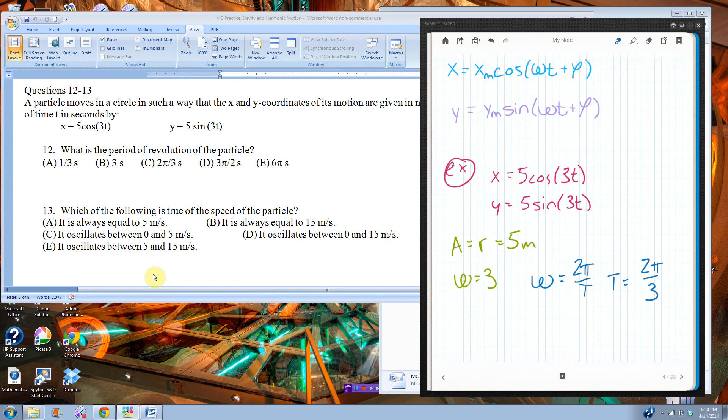Then it says, which of the following is true of the speed of the particle? Well, if it's undergoing uniform circular motion, then the speed is constant. So, it's either A or B, because all the other ones are talking about the speed changing. So, is it A or B? Well, the 5 is the radius, not the speed. If I want speed, remember, linear speed is omega times R, so that's going to be 3 times 5, 15. It is always equal to 15 meters per second, so it's B. Notice, these problems should not be taking very long. These are your multiple choice problems. You're supposed to be able to do them in, like, one minute or less, and it's all about recognizing that this is simple harmonic motion and yanking out, hey, the thing in front is the amplitude, and the thing attached to the T is the angular velocity. And that's it.